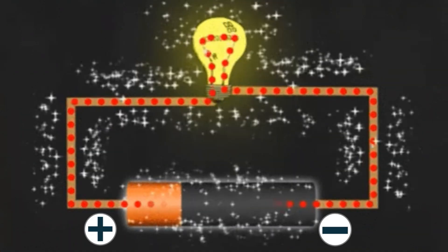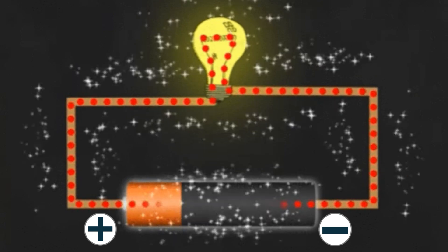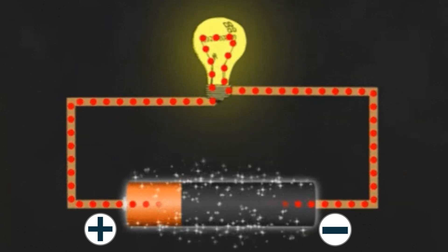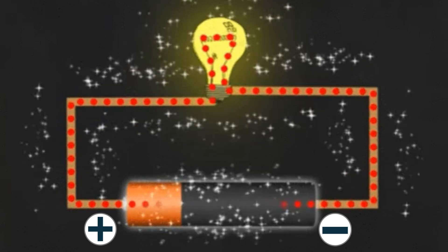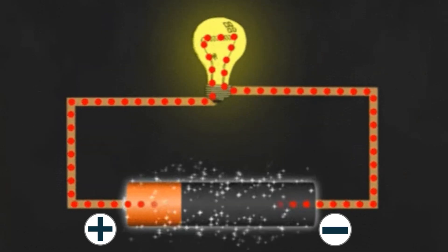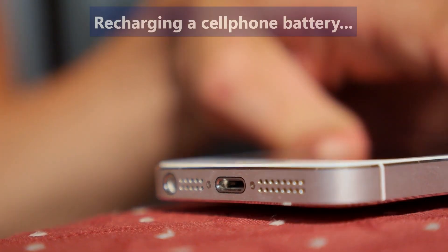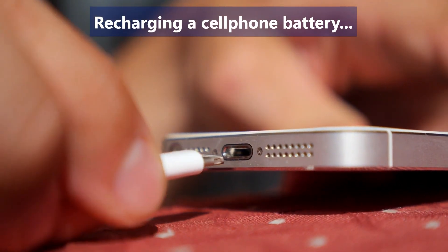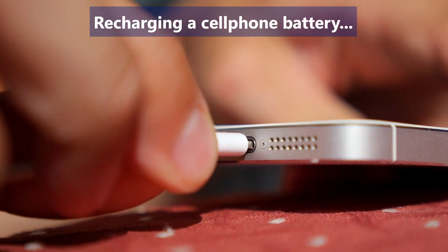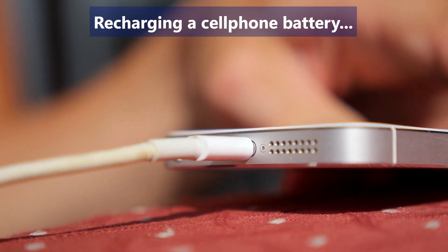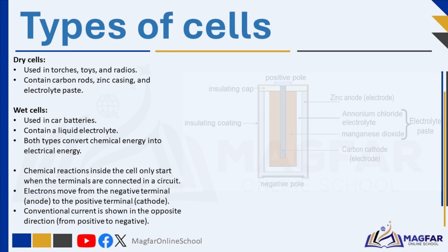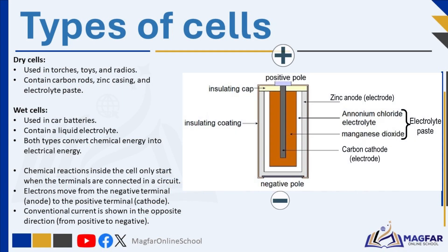Eventually, the chemical energy inside the cell is used up, and the cell stops working — we say the cell is flat. Some cells cannot be reused once flat, but others can be recharged using special chargers connected to electricity mains. The cells used in everyday items such as torches, toys, and radios are called dry cells. They contain a carbon rod and a zinc casing as electrodes, with an electrolyte paste.